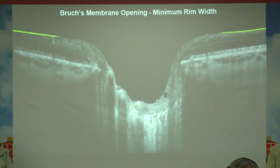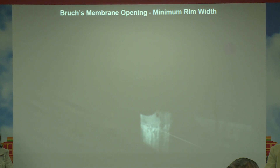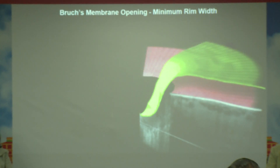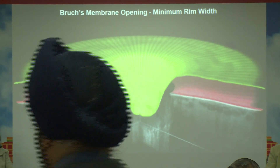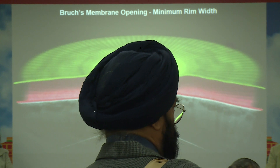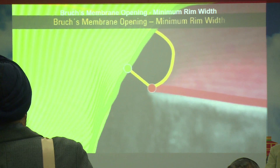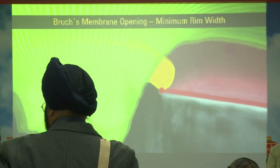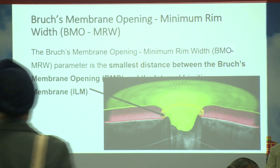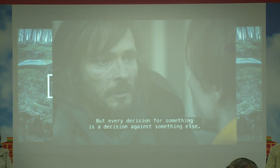Not only that, it introduces the concept of minimum rim width. Traditionally we were taking the horizontal direction as the horizontal rim width to examine patients. But this technology has revolutionized things: at every one of the 48 segmented sections, it is the minimal distance between the green internal limiting membrane and the red dot — the Bruch's membrane opening — that is taken into account. That is called the Bruch's membrane opening minimum rim width.